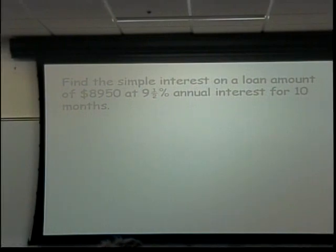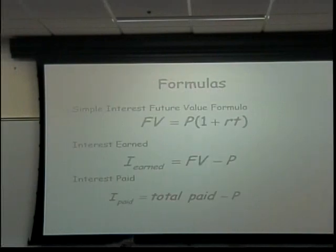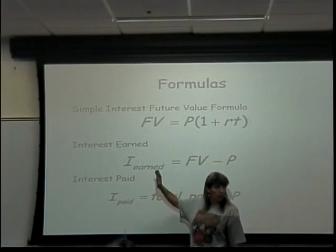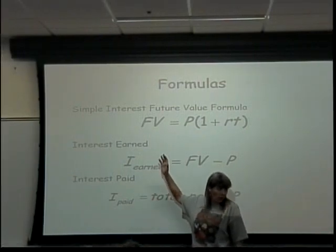Find a simple interest on a loan amount of $8,950 at 9.5% annual interest for 10 months. Oh, maybe I should tell you what all those letters mean. Maybe we should go back to the letters in a minute. It was on the sheet, but just in case you didn't read the sheet that quick.